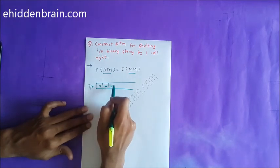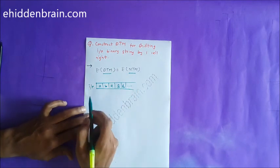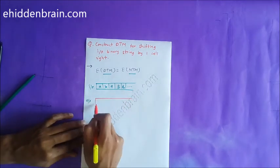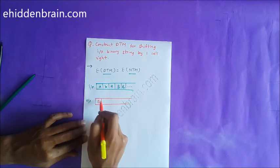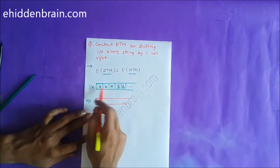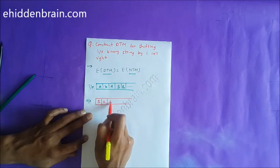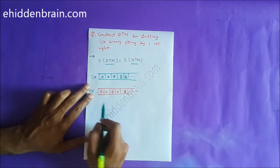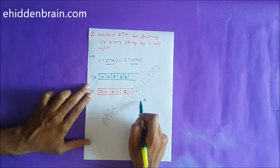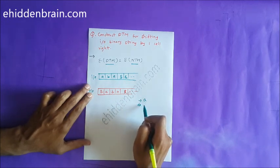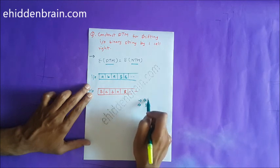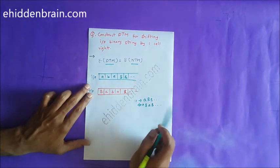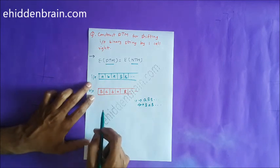This is the input tape — let's say it contains 'a', 'b', 'a', and then all blanks (B). The output should be shifted by one cell to the right. So the output tape should look like: the first cell becomes blank (B), then 'a', 'b', 'a', followed by blanks. For a simple example with just 'a' as input, the output should be 'B', 'a'.